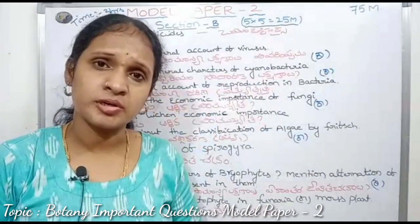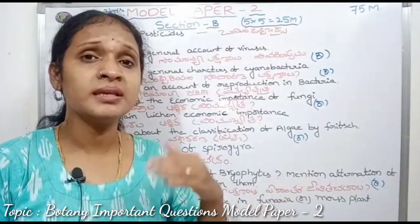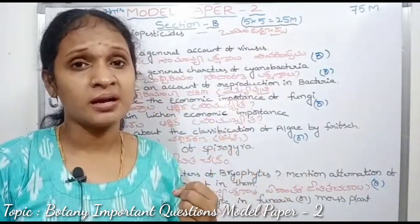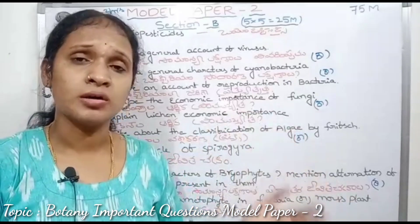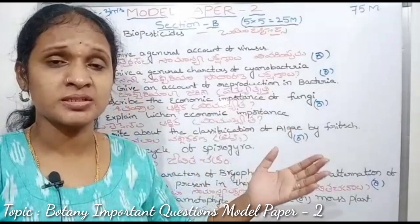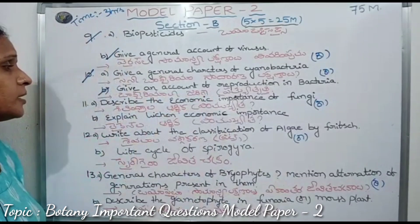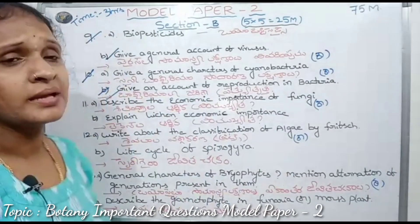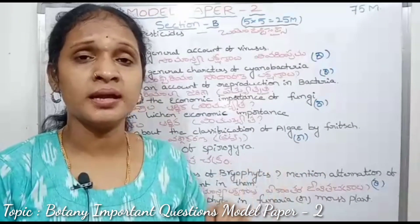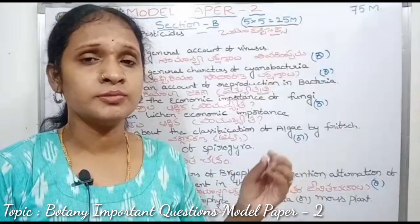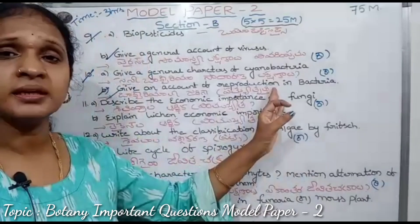Give an account of reproduction in bacteria. True reproduction is absent in bacteria, but they undergo genetic recombination. Based on genetic recombination, bacteria are divided into three types: conjugation, transformation, and transduction. Explain all three.